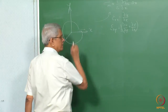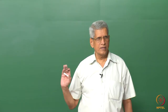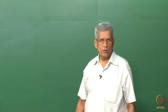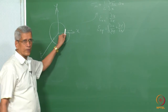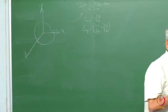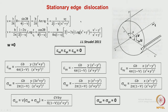For the edge dislocation, taking a Burgers circuit around it gives a displacement in the x direction — that is the Burgers vector. In the screw dislocation, the Burgers vector is in the same direction as the dislocation line. Here it is perpendicular to the line direction. Intuitively, the displacements are only in x and y directions; no displacement exists in the z direction. The solution for u and v is more complex but is given in most textbooks.